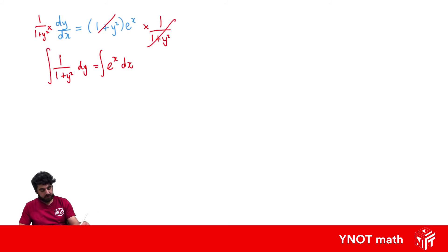So we're also given the initial condition that when x equals 0, y equals 1. So integrating 1 over 1 plus y squared gives us the inverse tan of y. And integrating e to the x just gives us e to the x, and we can add our constant in on this side.